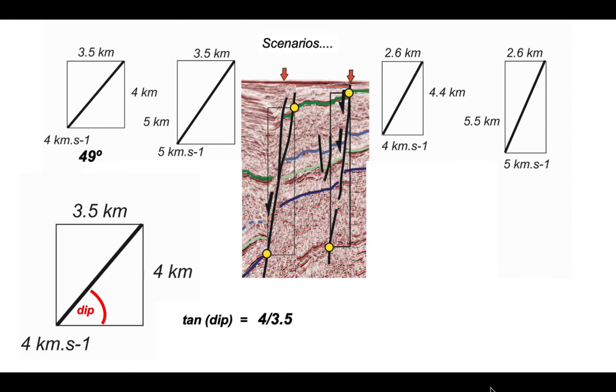We can use the same approach to work out the dip for all the other scenarios that we've got shown on the screen. And here they are. So our fault on the left, if we have a seismic velocity of 4 kilometres per second, then the fault has an apparent dip of 49 degrees. But if we increase the seismic velocity to 5 kilometres per second, its apparent dip is 55 degrees.